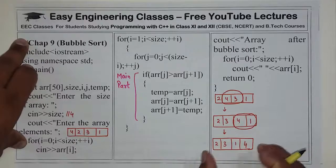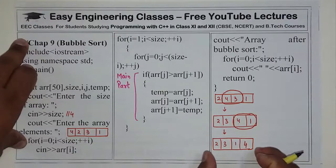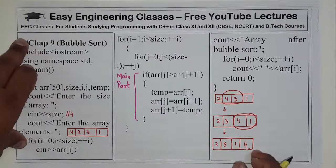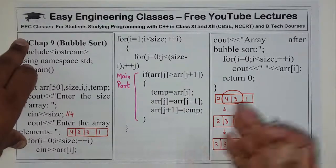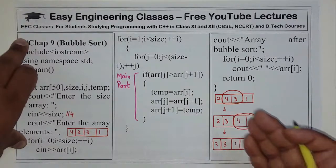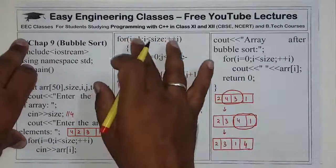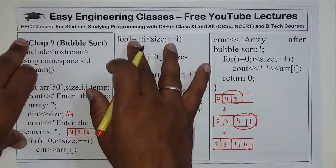So after the first iteration, when i value was 1, the array becomes: 2, 3, 1, 4. i is basically used for counting purposes.